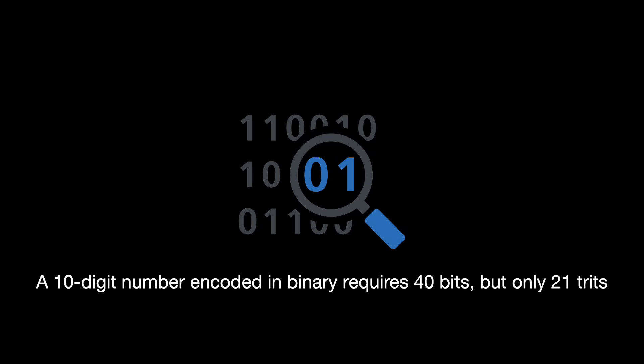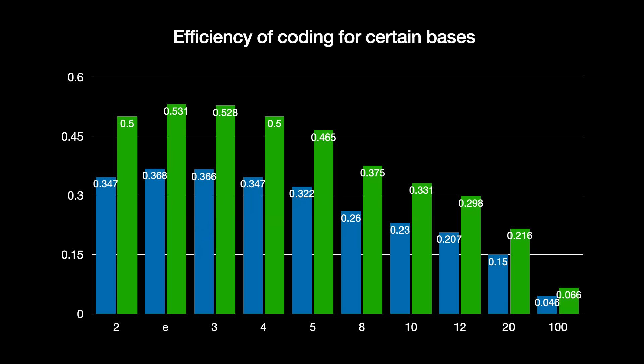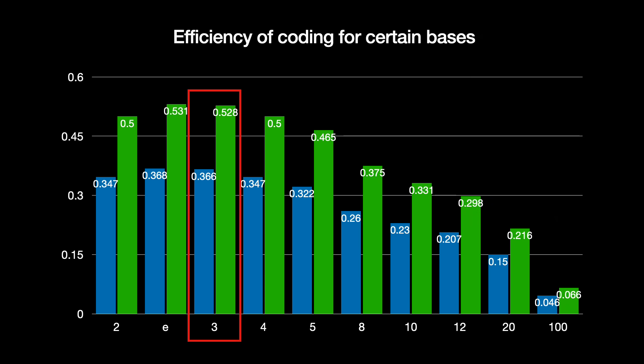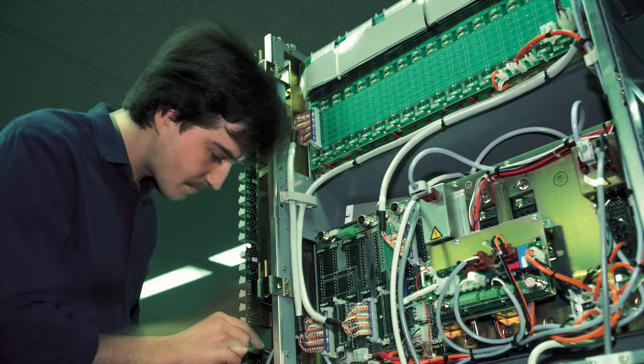We can use any base we want. The higher the base, the more information a base-encoded digit can carry, so we need fewer digits for the same information. A ten-digit number encoded in binary requires 40 bits but only 21 trits. But higher bases also impose a resource and complexity cost. The theory goes that the optimal base strikes the right balance between information carry and cost.